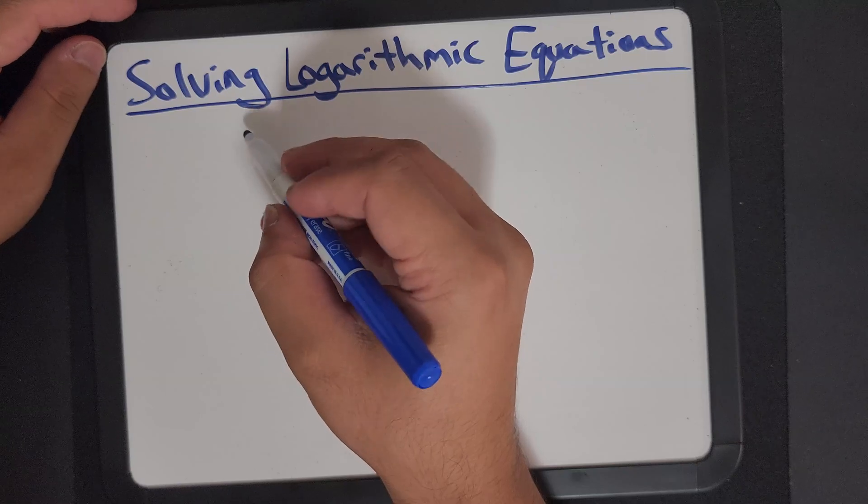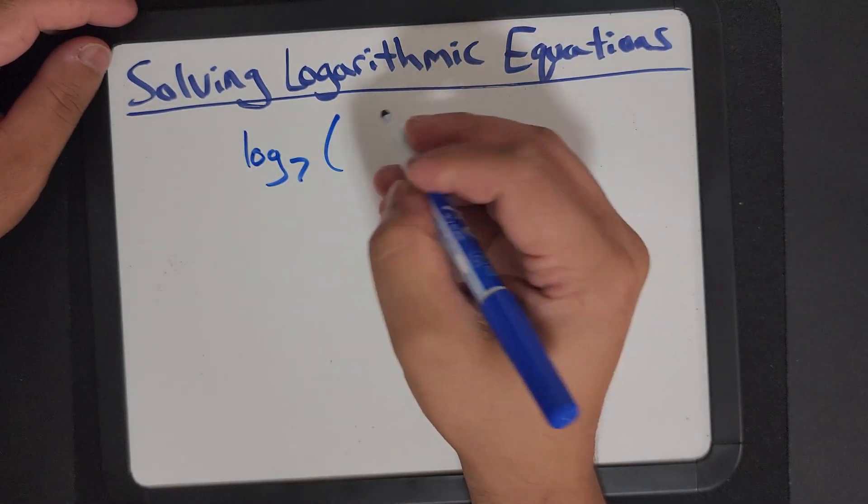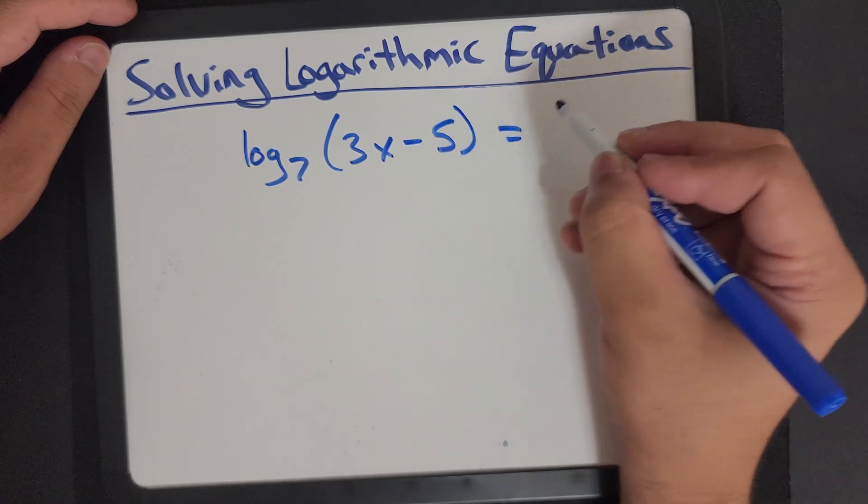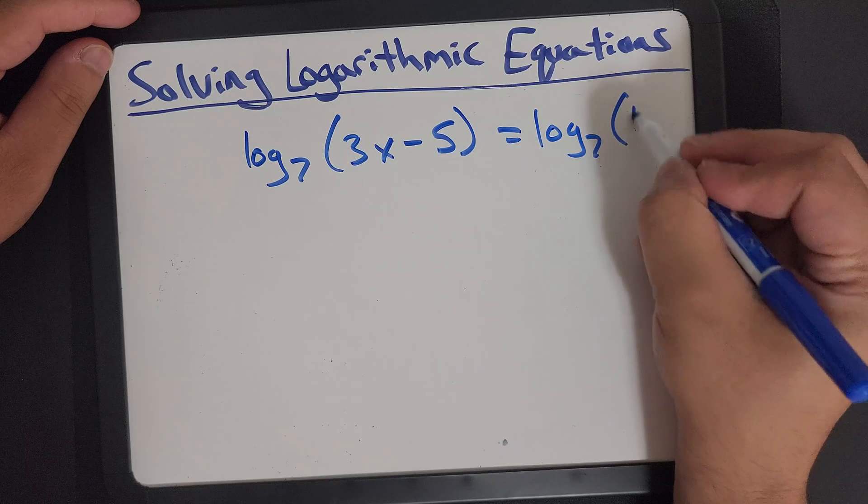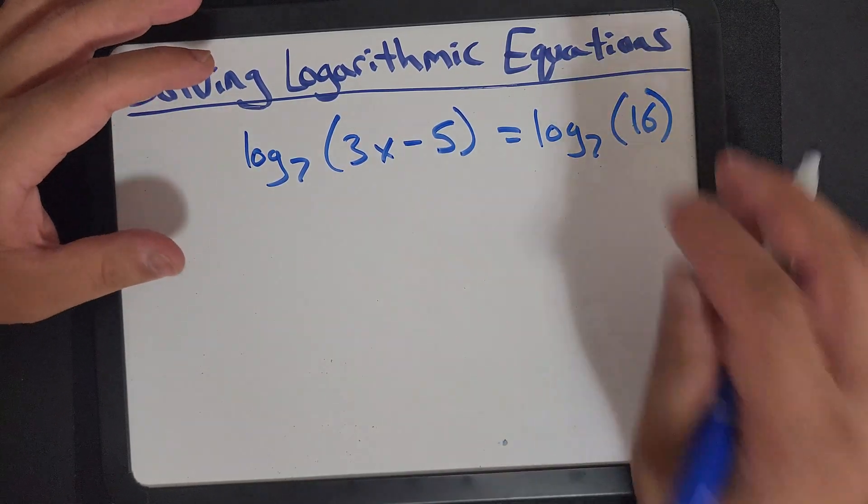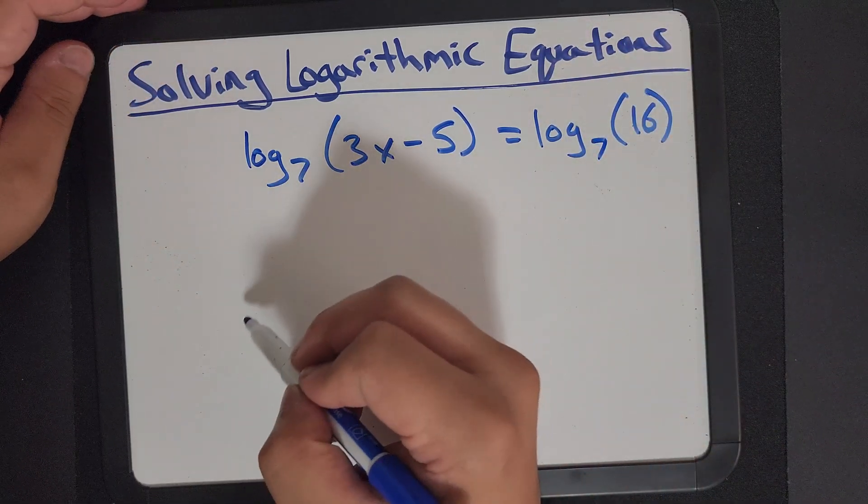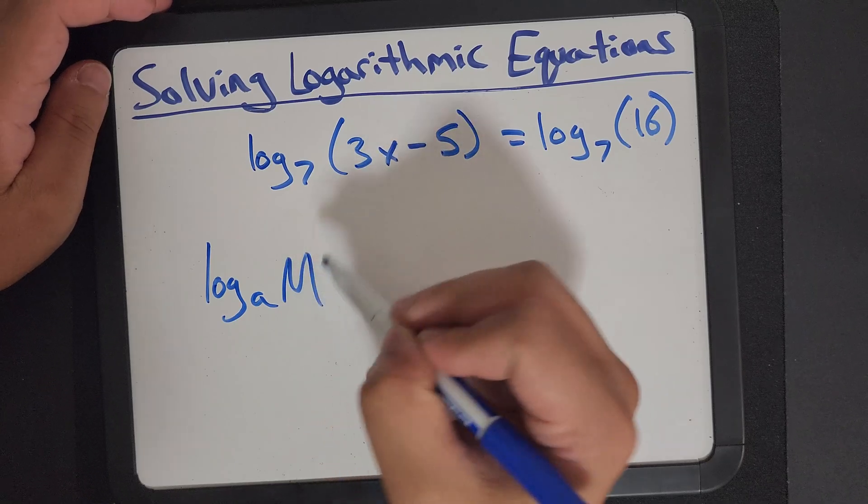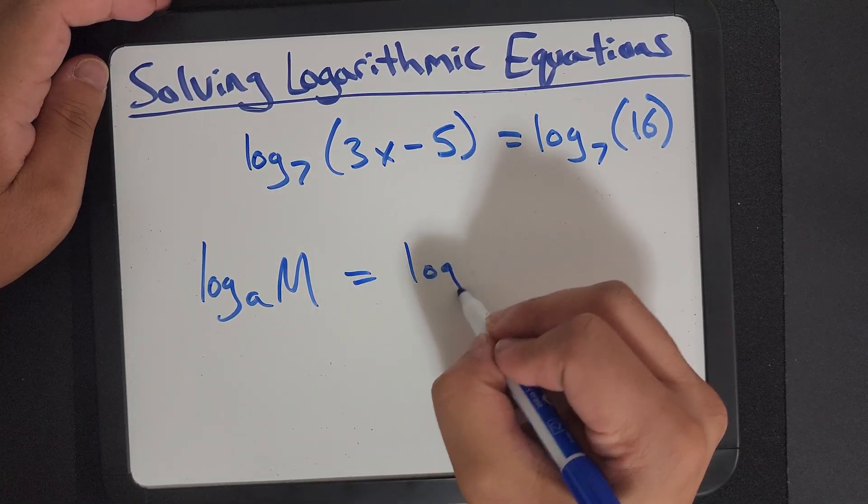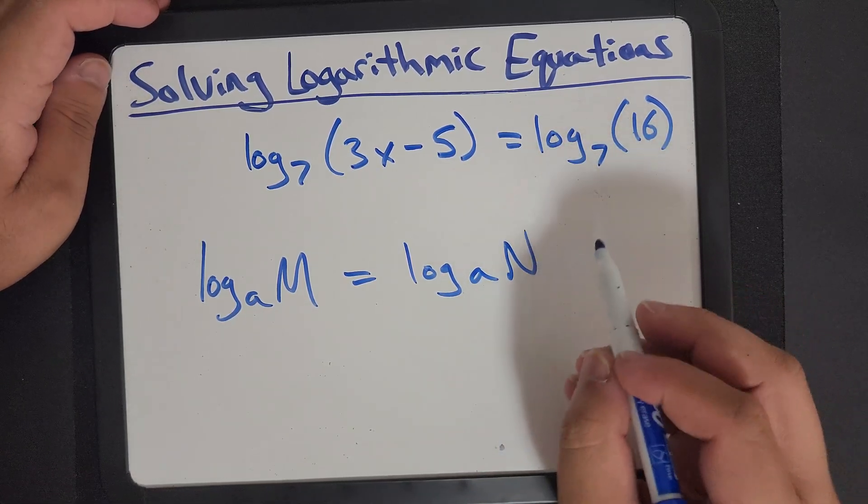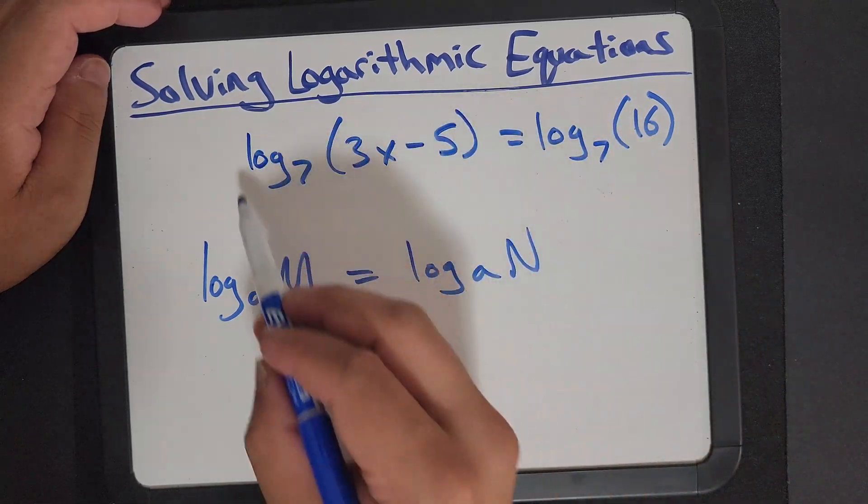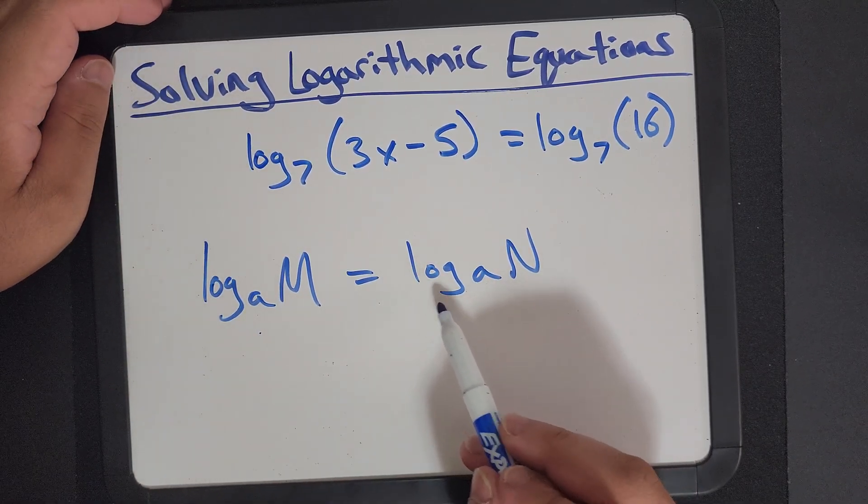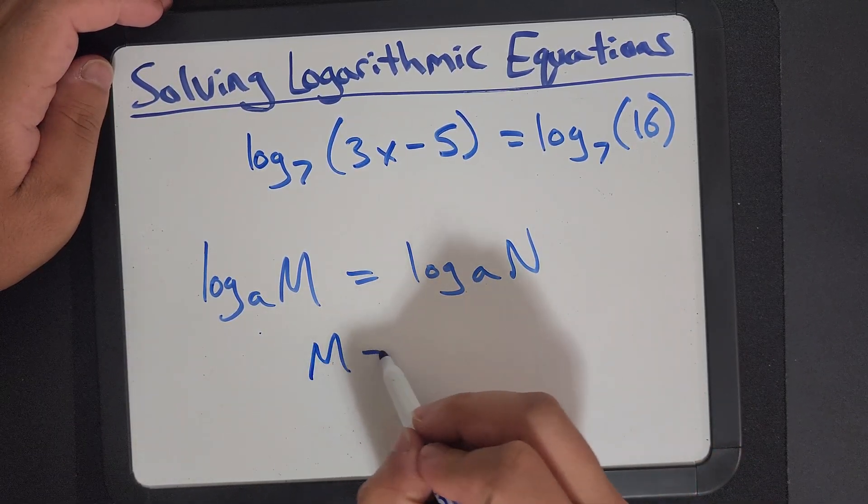Let's try something like this. Here we have log base 7 of 3x minus 5 equals log base 7 of 16. One thing to note here, maybe this is probably a new law that I haven't shown you before. But if you have a log of a and say something here, m, and then you have a log with the same base and n, if this is your equation which we are looking at similarly here, if you have log base a of something equal, you can say m is equal to n.